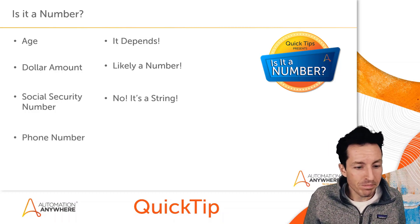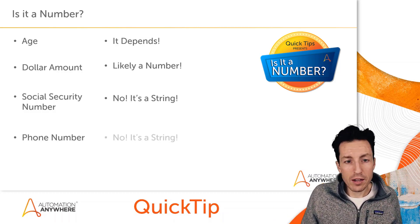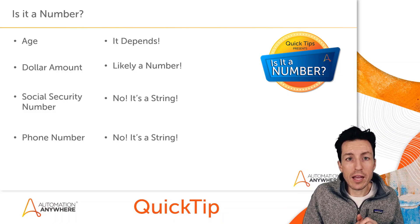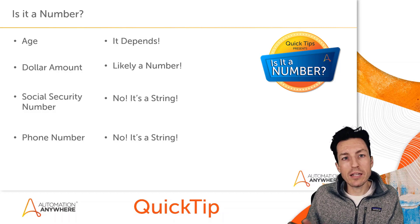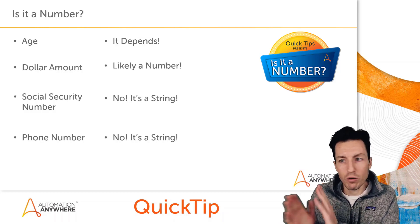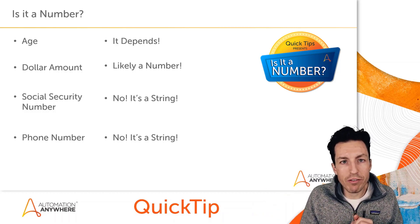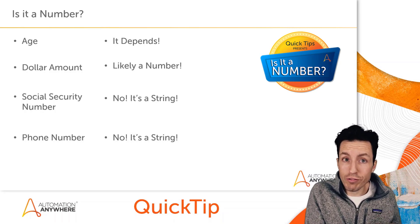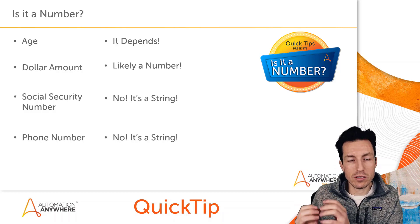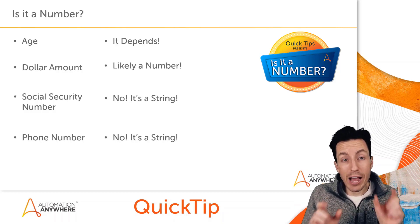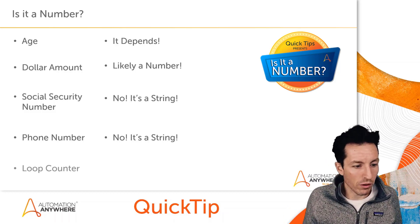Phone number — what do you think, number or string? This one is definitely a string. I'm not doing calculations on someone's phone number. The only exception might be checking whether it's a local phone number by comparing it against a local area code, but even that I would do as a string comparison, not a numerical comparison.